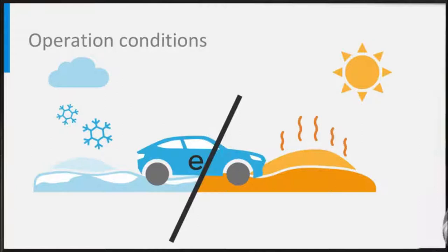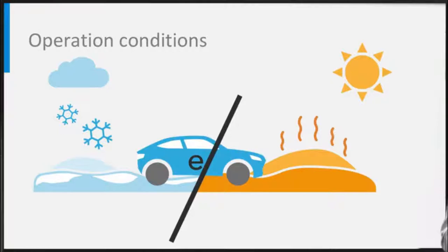Batteries for electric vehicles consist of many interconnected cells, in combination forming a battery pack. To secure a long cycle life, safety, and optimal performance, the current and capacity distribution over the individual cells needs to be regulated. This is achieved by the Electronic Battery Management System, the BMS.